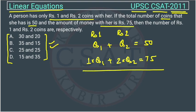We will minus this equation, then Q1 will get cancelled. This will become minus Q2 is equal to minus 25.